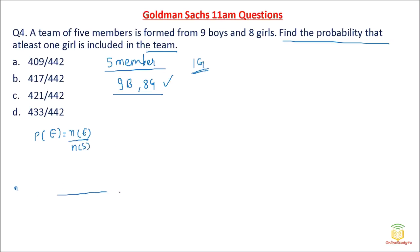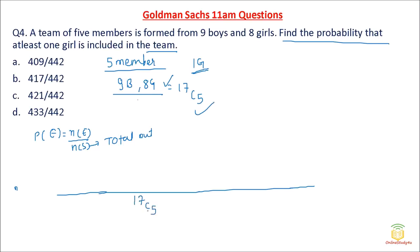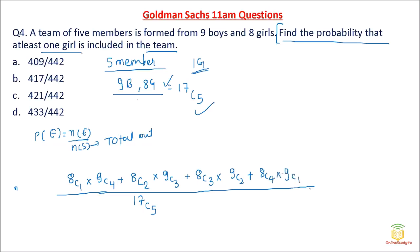For the favorable outcomes, at least 1 girl means: Case 1: 1 girl and 4 boys; Case 2: 2 girls and 3 boys; Case 3: 3 girls and 2 boys; Case 4: 4 girls and 1 boy; Case 5: all 5 girls. We compute each combination using nCr and sum them up.